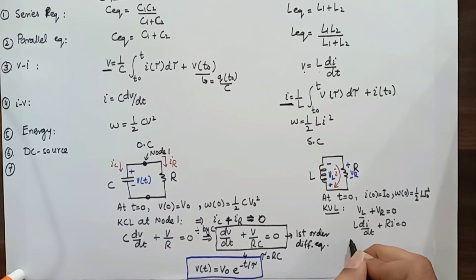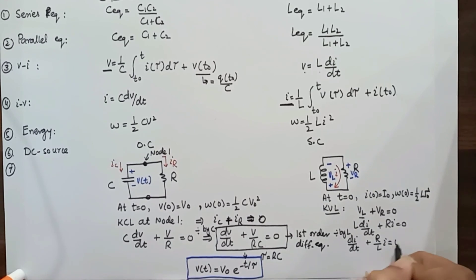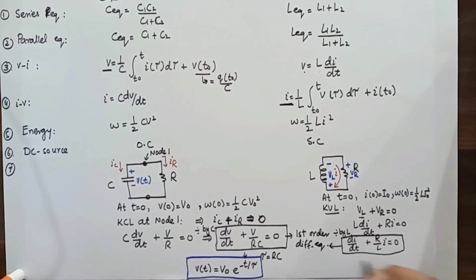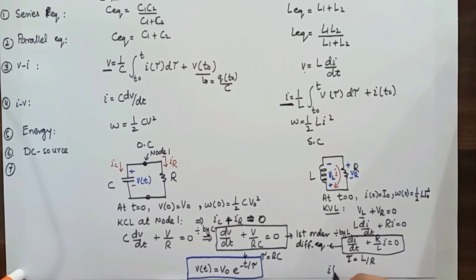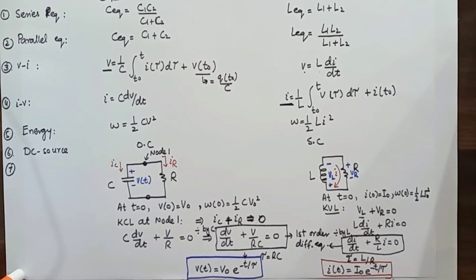Dividing by L gives: di/dt + (R/L) × i = 0. This is the first-order differential equation for an inductor circuit. The time constant τ = L/R. Rearranging and integrating, we get: i(t) = I₀ × e^(−t/τ). This is the natural current response for an inductor.